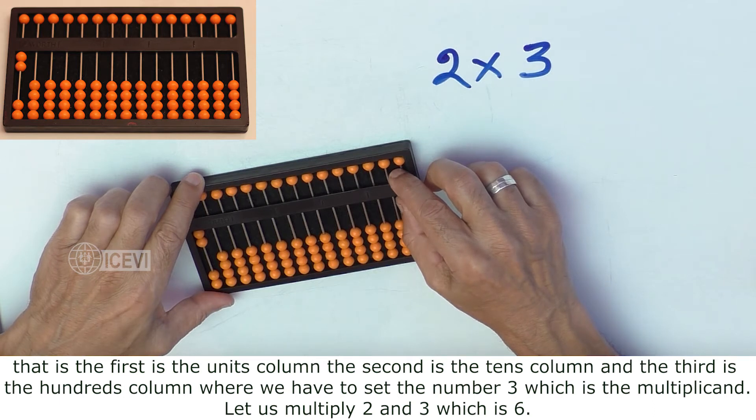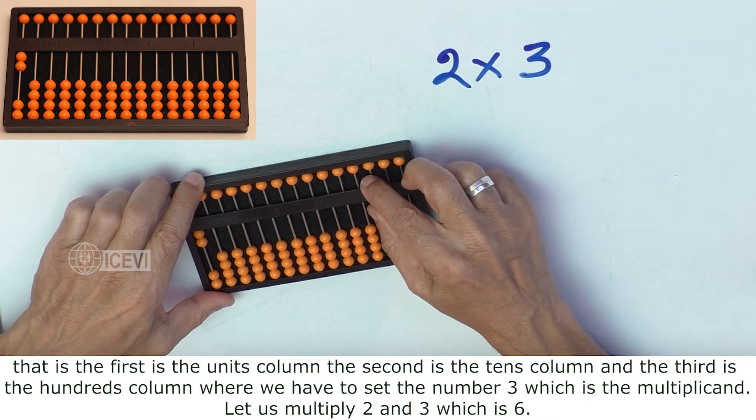That is, the first is the units column, second is the tens column, and the third is the hundreds column.